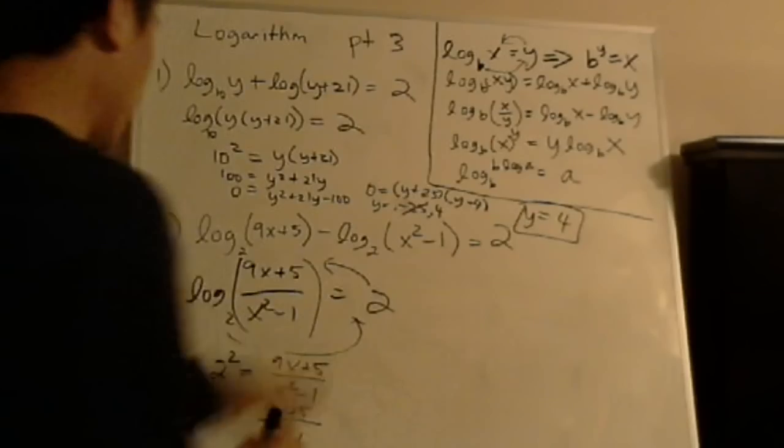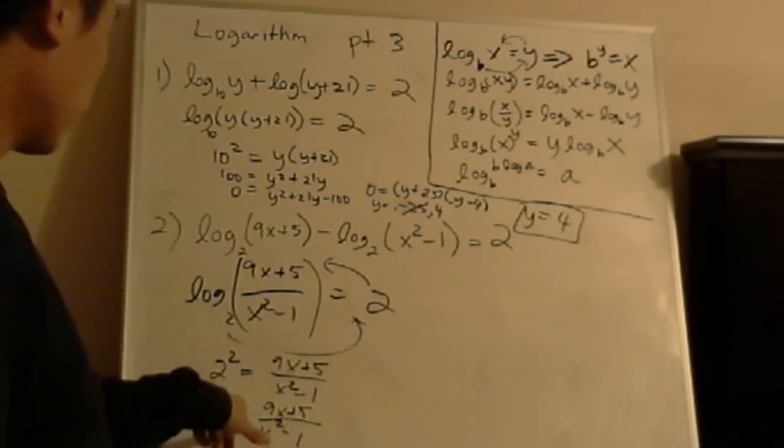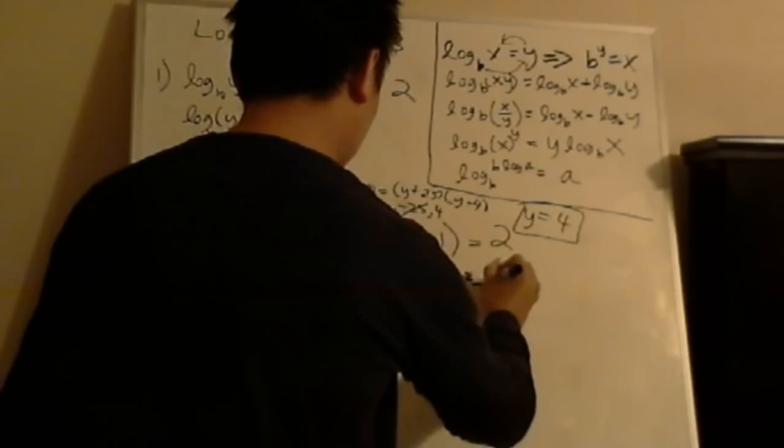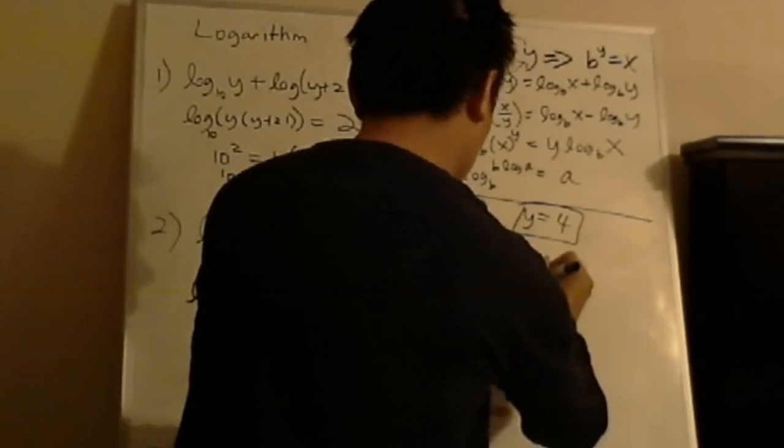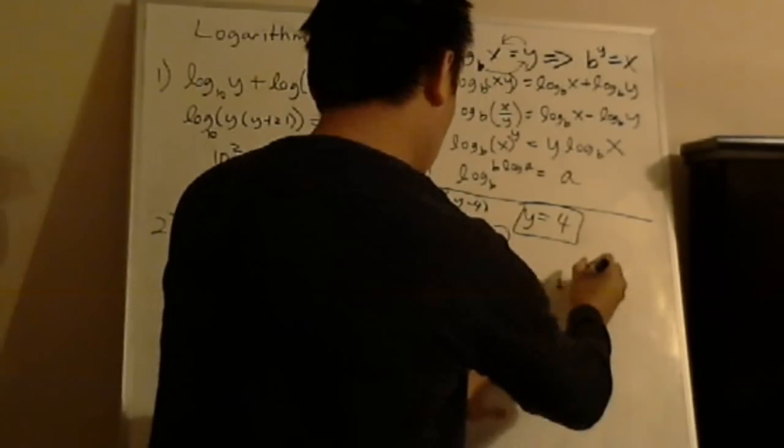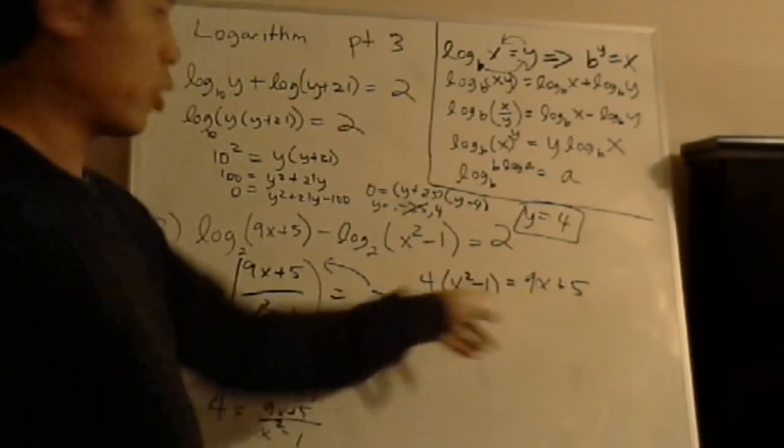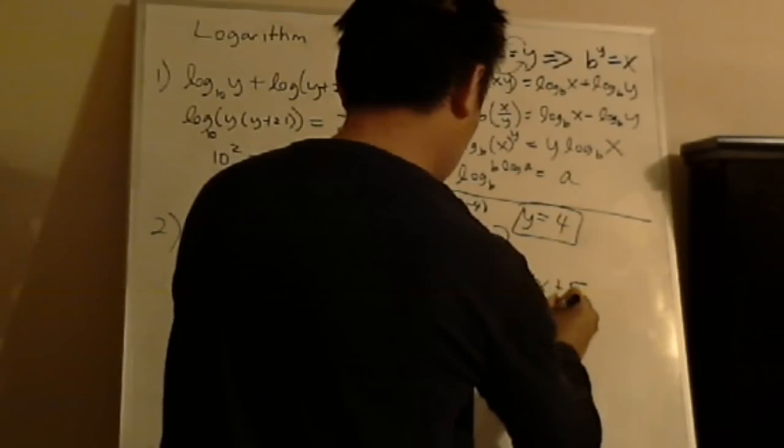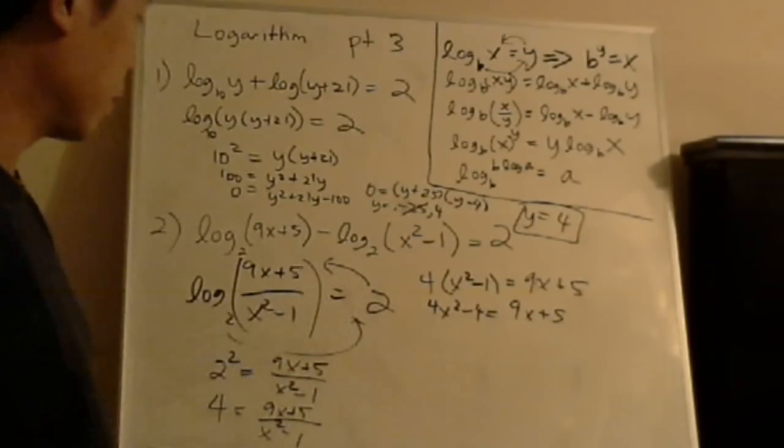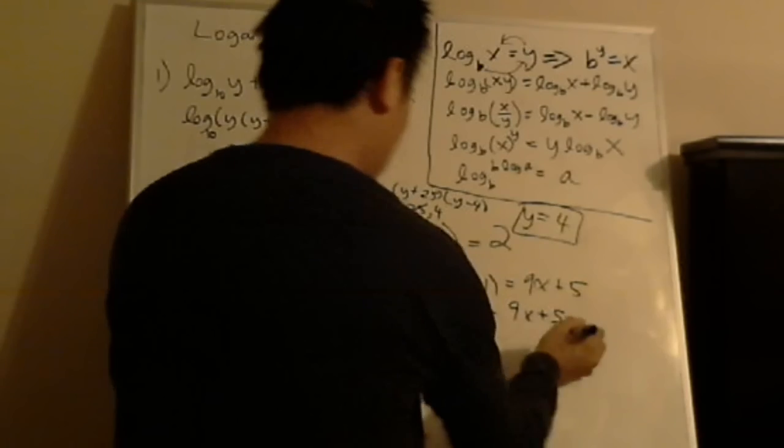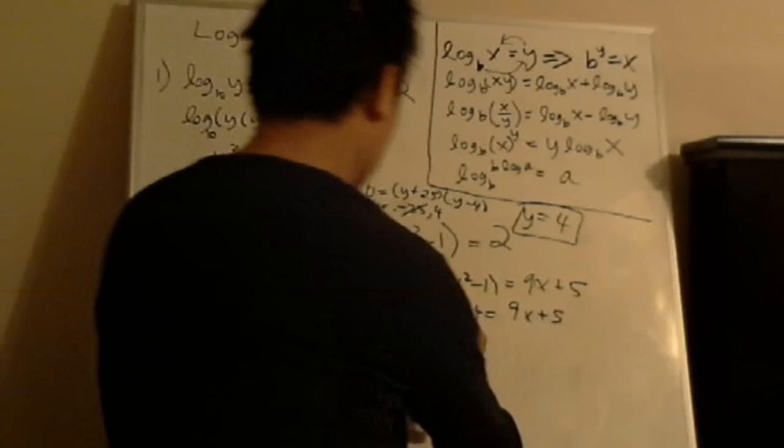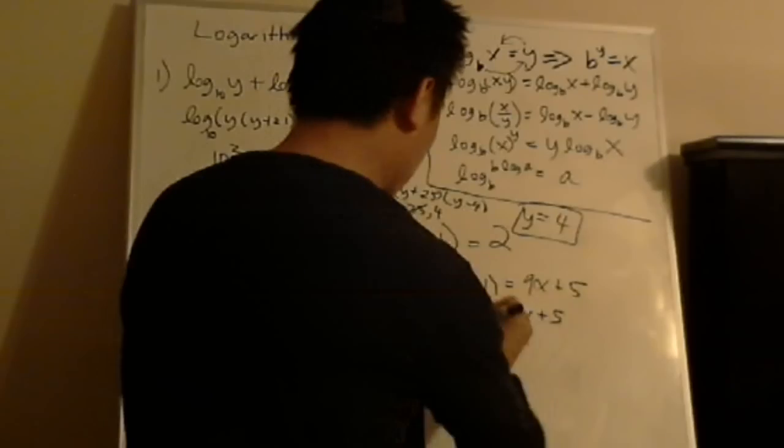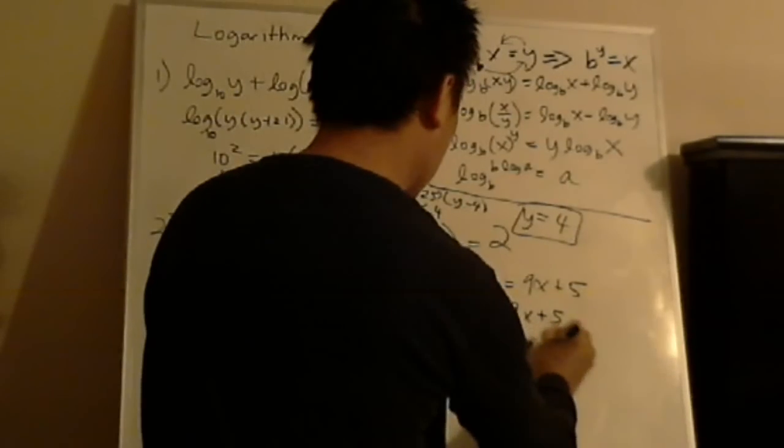And let me write it over here, continue over here so there's more space. And what I do, I multiply x squared minus 1 on both sides, right? So I can get rid of the denominator. So now what I do, I distribute the 4. And then I set it equal to 0 is the best way to do it. So I move the 9x over, I subtract 9x, and I subtract 5. So I'll get 4x squared minus 9x, and I subtract 5, negative 4 minus 5, so it'll be negative 9.